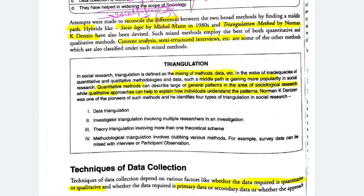To reconcile these differences, researchers tried a middle path — like hybrid sociological methods by Michael Mann, which use a qualitative and quantitative mixture. And there is the triangulation method by Norman K. Denzin. Such mixed methods employ the best of both quantitative and qualitative approaches. Content analysis and semi-structured interviews are also some hybrid methods.